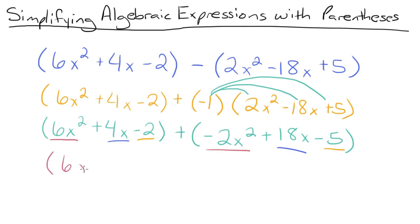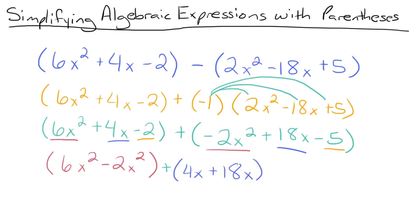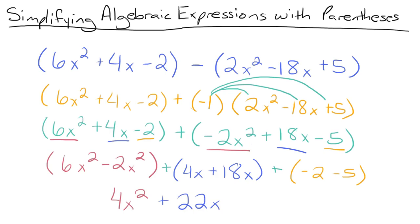Now we're going to regroup these like terms into their own sets of parentheses. We'll have 6x squared minus 2x squared, plus 4x plus 18x, plus negative 2 minus 5. Now we'll simplify each set of parentheses. 6x squared minus 2x squared is 4x squared. 4x plus 18x is 22x. And negative 2 minus 5 is negative 7. So our final answer is 4x squared plus 22x minus 7.